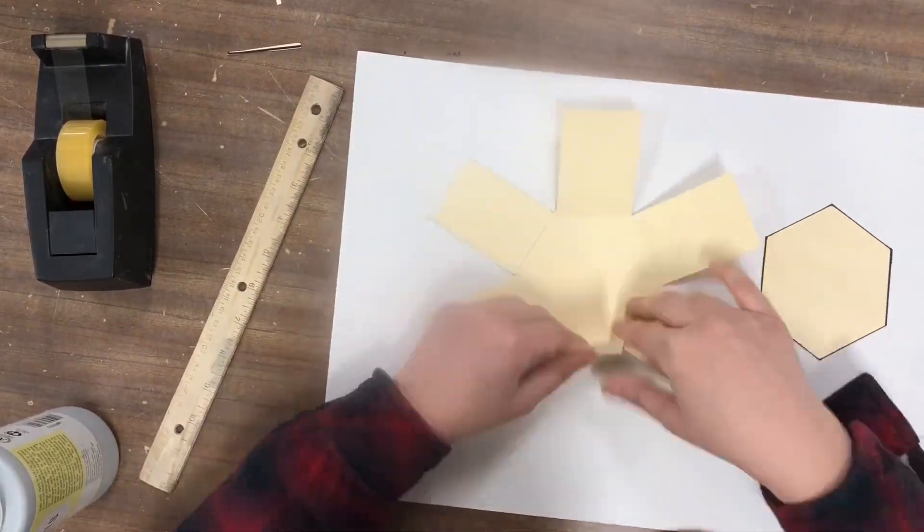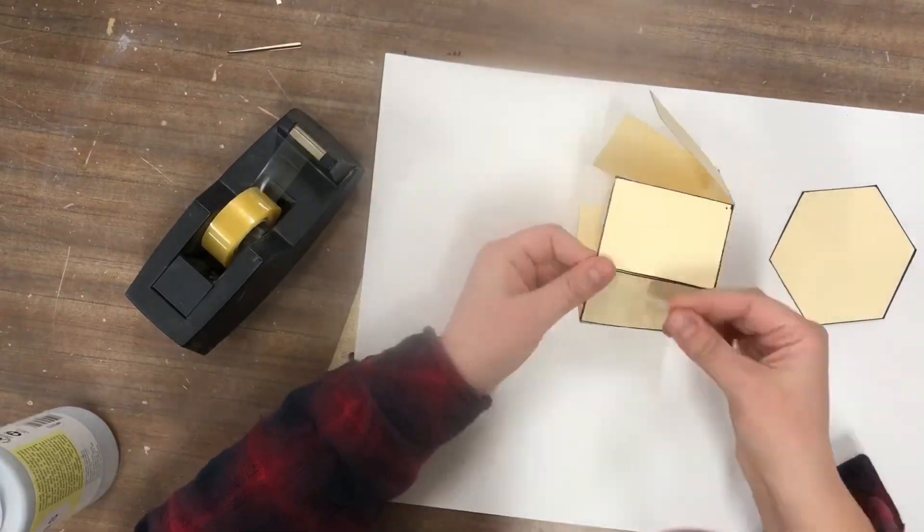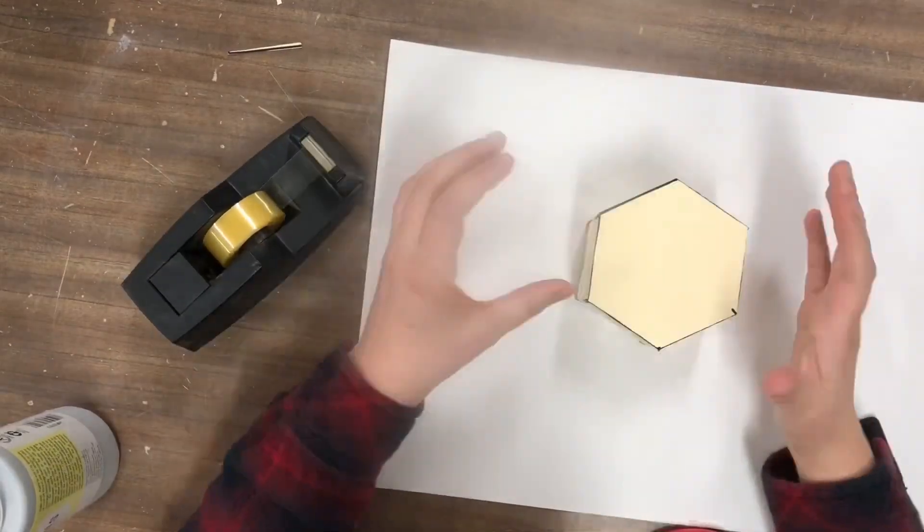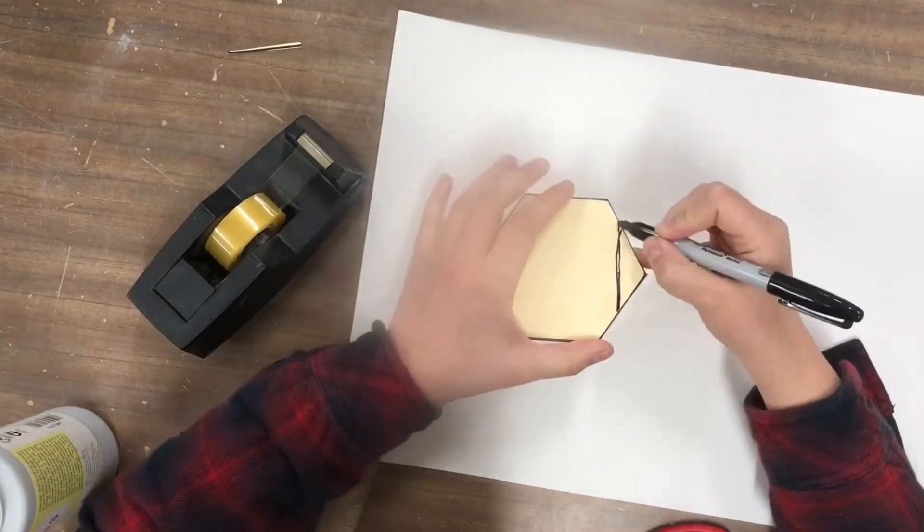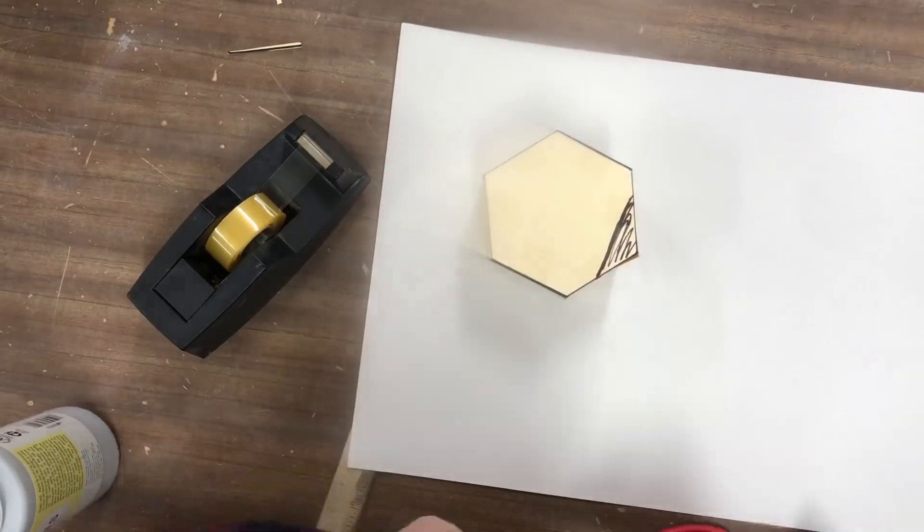Fold alongside each of the lines and start taping the walls together. Now you can start altering your prism. Mark out the section you want removed, then cut it out.